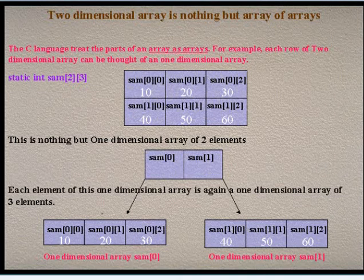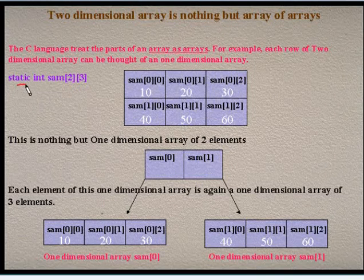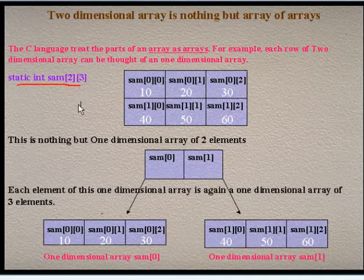In the previous program, we have shown that a two-dimensional array is nothing but an array of arrays. Here, I would like to discuss this concept diagrammatically. This static integer SAM[2][3] is a two-dimensional array. We can show this array diagrammatically like this.